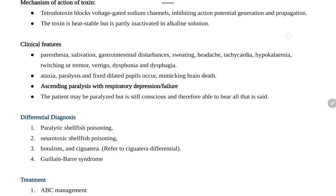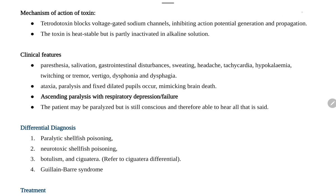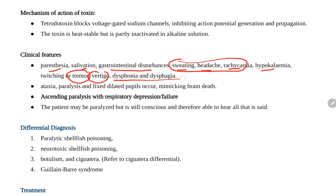Clinical features: patients present with paresthesia, salivation, gastrointestinal disturbance — nausea, vomiting, diarrhea — sweating, headache, and tachycardia as autonomic disturbances. Also hypokalemia, tremor — most important — vertigo, dysphagia, and dysphonia. Patients may have ataxia due to cerebral involvement, weakness involving the limbs, and most importantly, fixed dilated pupils.